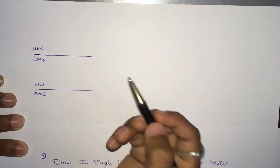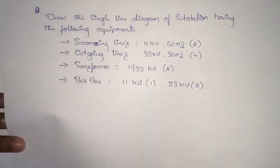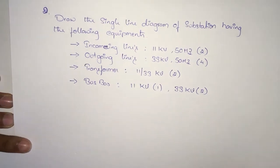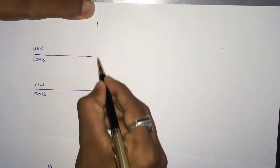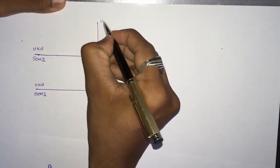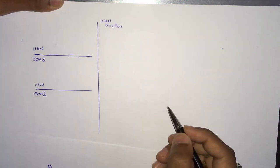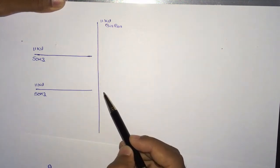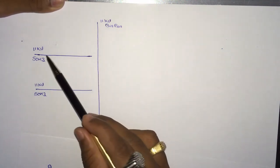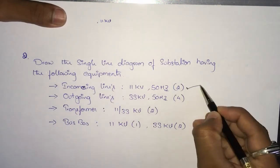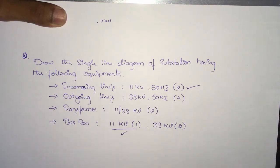The line and the bus bar voltage should match each other to connect. Here we are having one 11 kV bus bar. Since the incoming line is 11 kV and the bus bar is 11 kV, we can connect them. Mark it as 11 kV bus bar. We are done with the two incoming lines and the 11 kV bus bar.